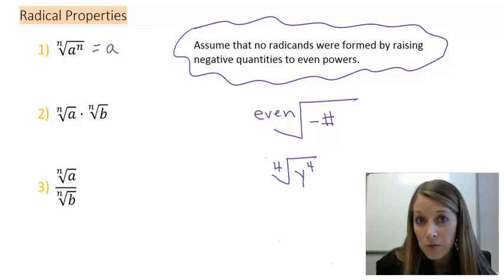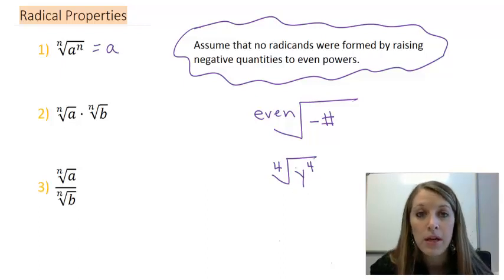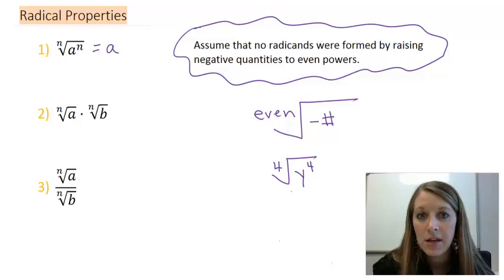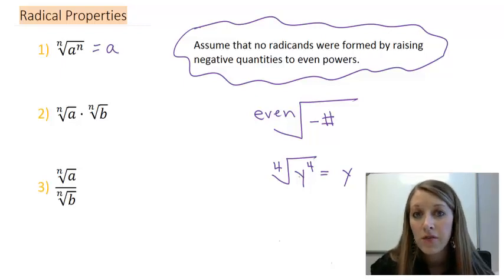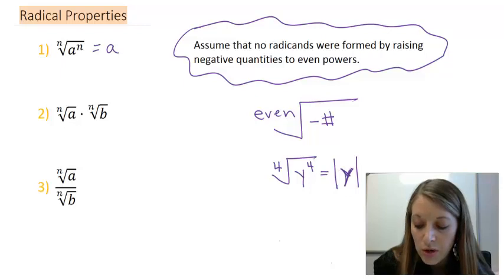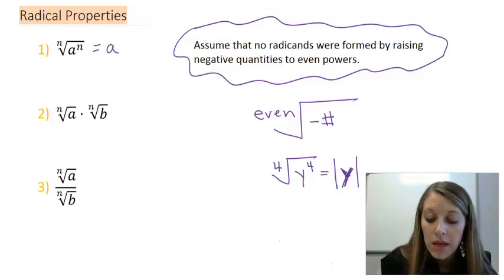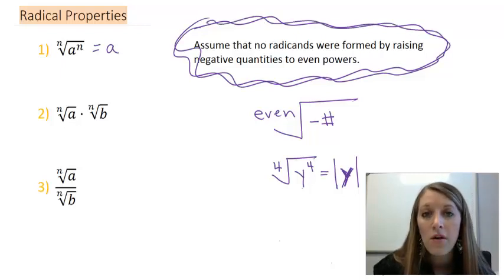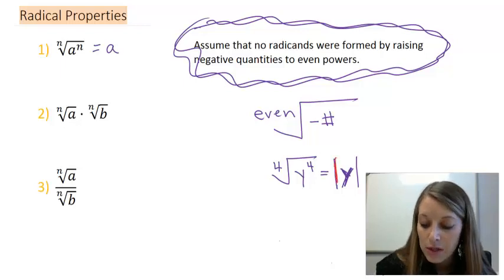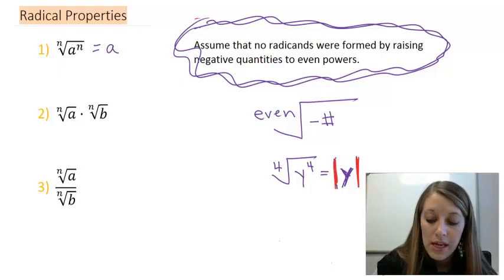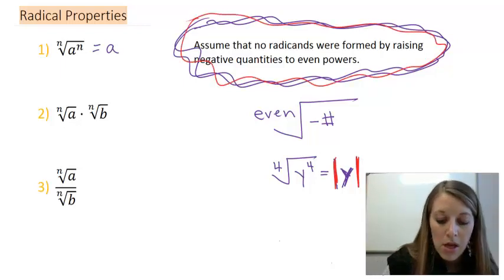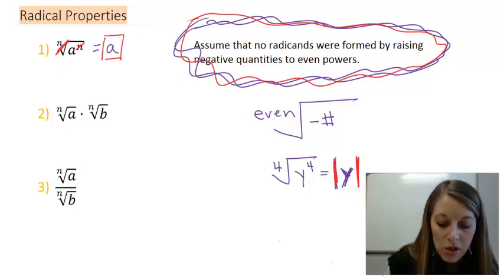But we still want to be able to take care of situations like this, such as the fourth root of y to the fourth power. Now I'm taking an even root, and I don't know exactly what my y variable is. Is it a positive number? Is it a negative number? Is it something else? Well, we still want to be able to simplify this example here, even though we don't know whether y is positive or negative. So what we can do is we know that the fourth power and the fourth root cancel out, but if we don't know that it's positive or negative, we can put absolute value bars over it to inform us and everybody else that this answer is in fact positive to begin with.